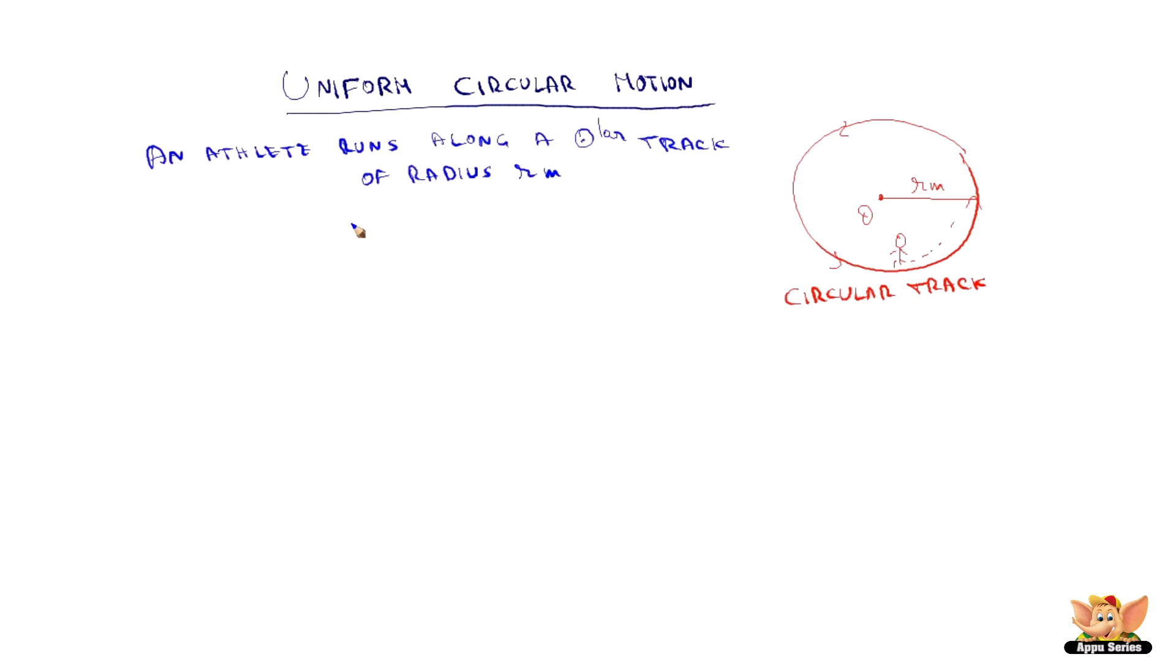So, an athlete runs along a circular track of radius R meter. Circumference of this track, since it is in a circle, 2πR meter.